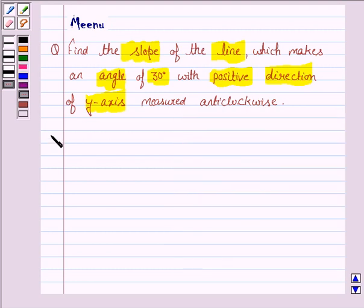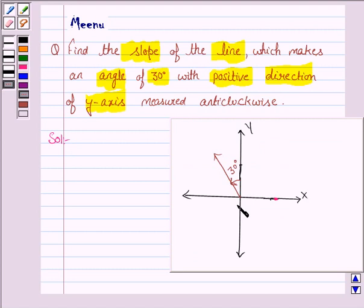Let us now move on to the solution. We are given that the line makes an angle of 30 degrees with y-axis measured anticlockwise.